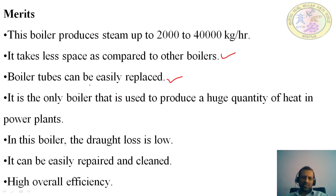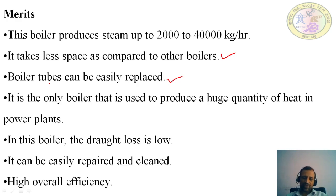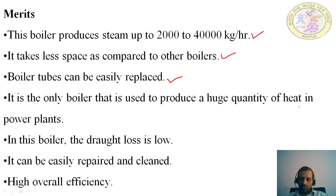The boiler tubes need replacement because impurities in the water get deposited on the walls of the water tubes, creating back pressure which can lead to explosion of the tubes. To avoid this, tubes need to be replaced periodically, or purified water should be used for steam generation. It is also the only boiler used to produce a huge quantity of heat in power plants.